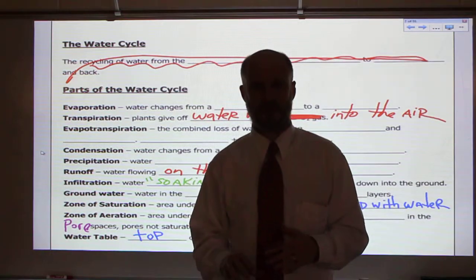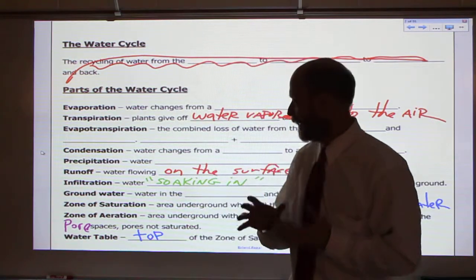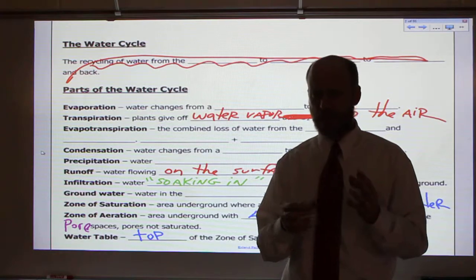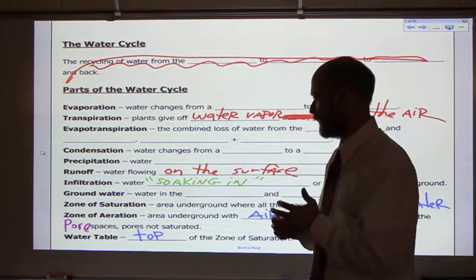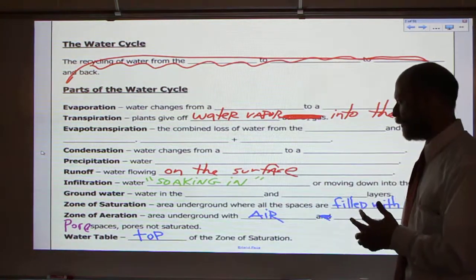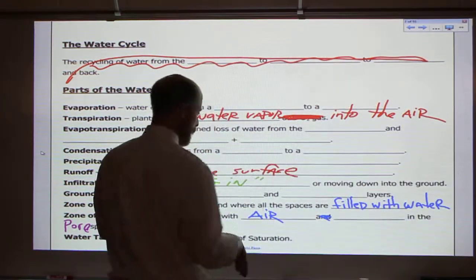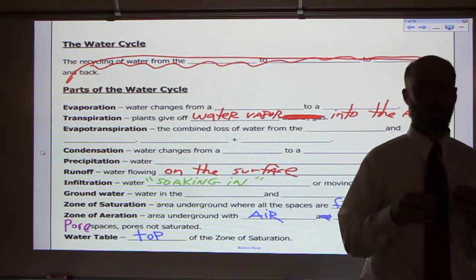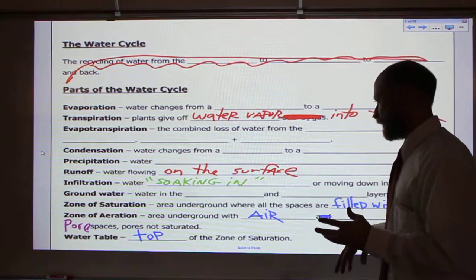Infiltration is that water soaking into the ground, and we're going to look at things that affect whether it runs off or infiltrates into the soil itself. Zone of saturation is an area underground that is filled with water. We'll explain that in a little bit.